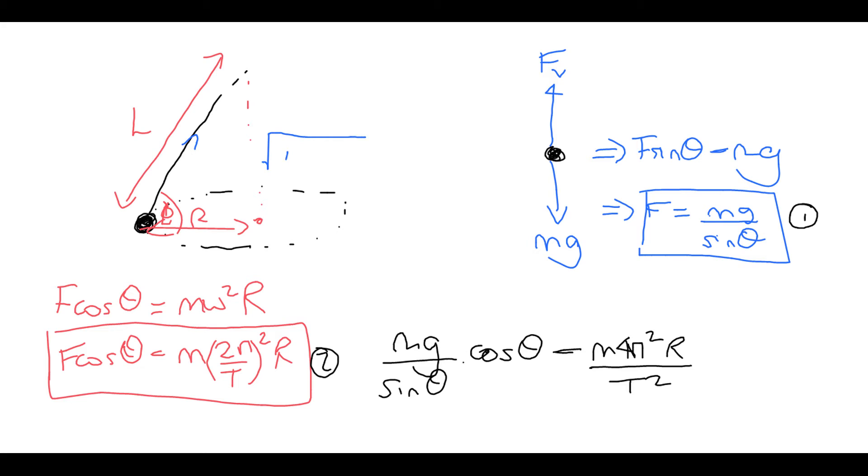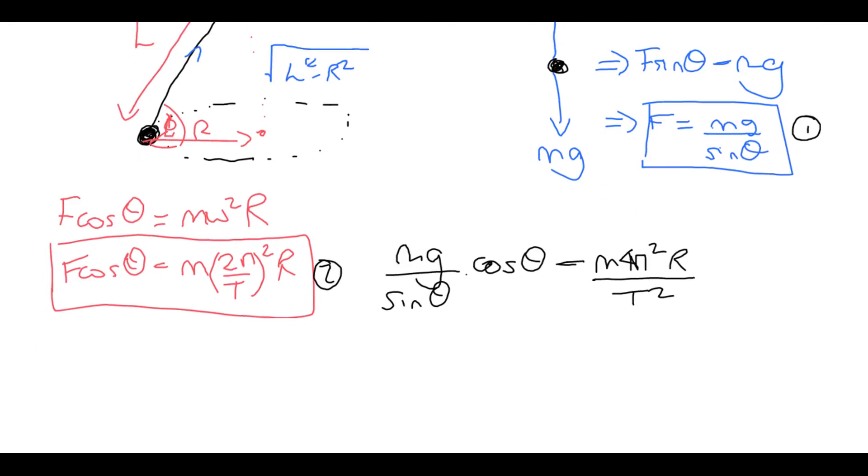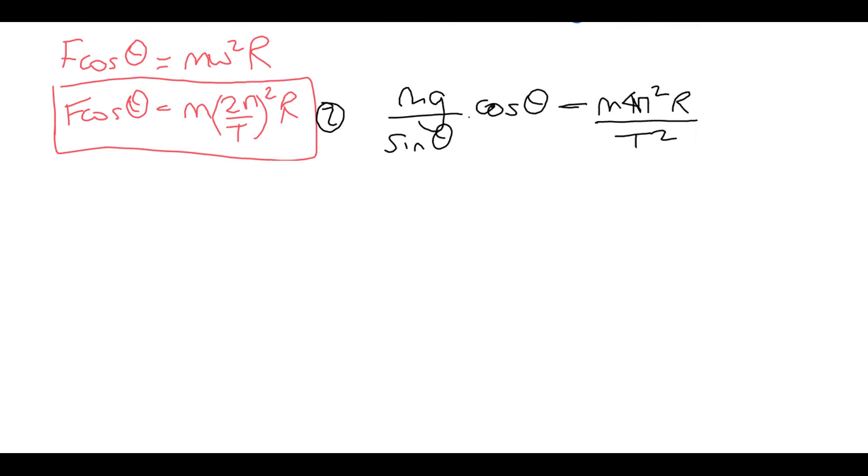So we know we've got what the adjacent side is, we've got the hypotenuse. So by applying some Pythagoras, we can work out what the length of the opposite side is too.